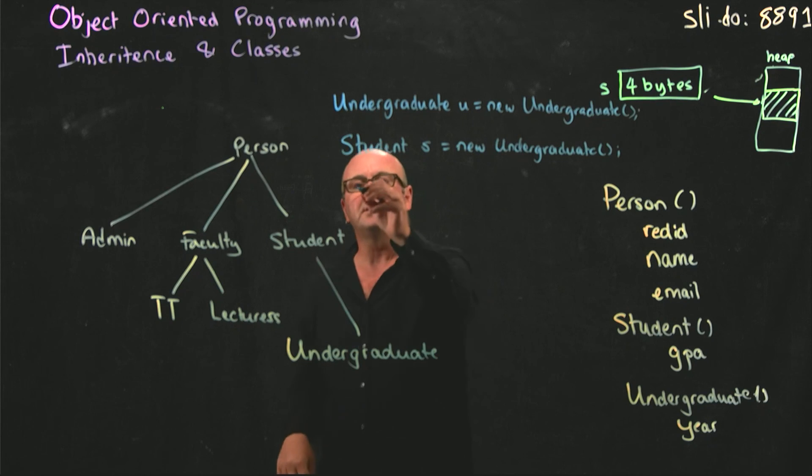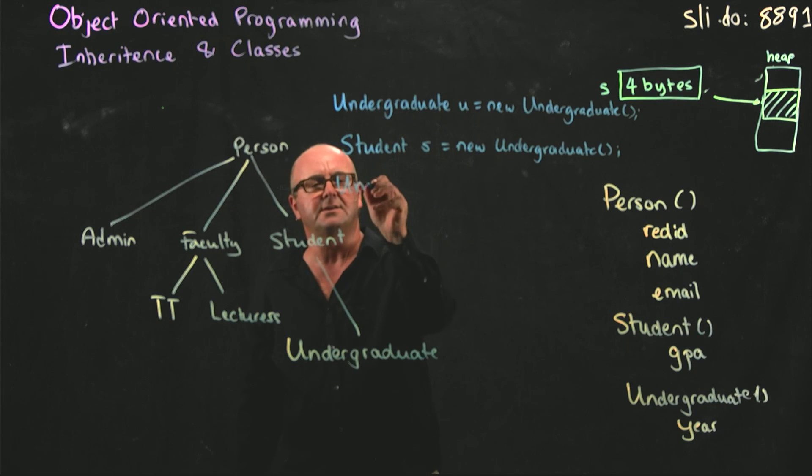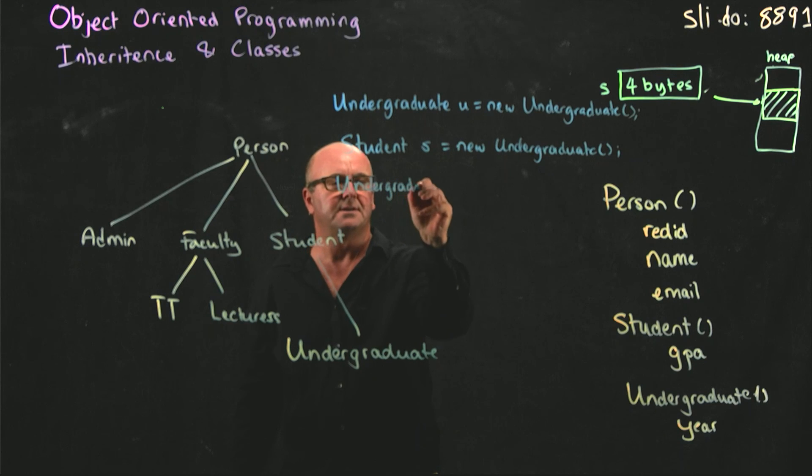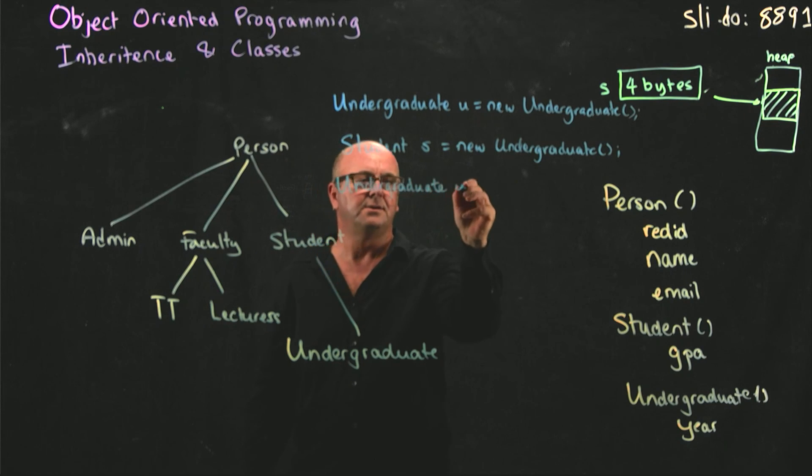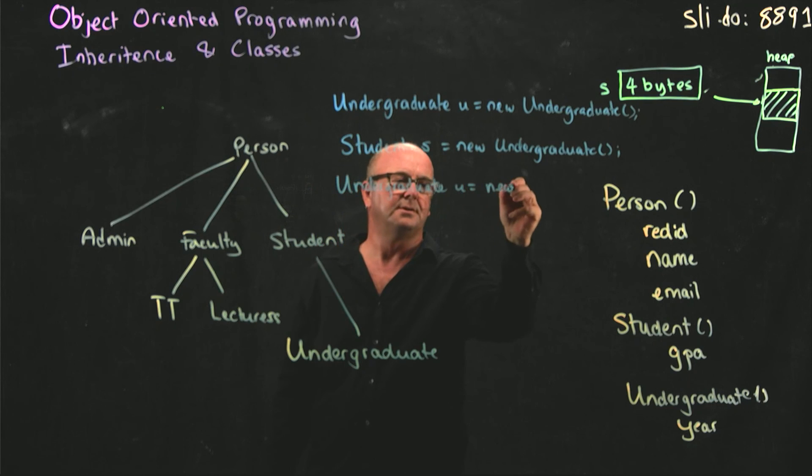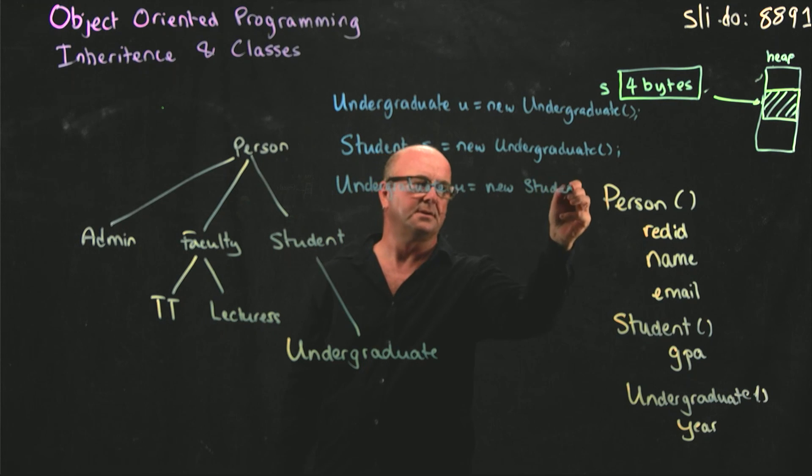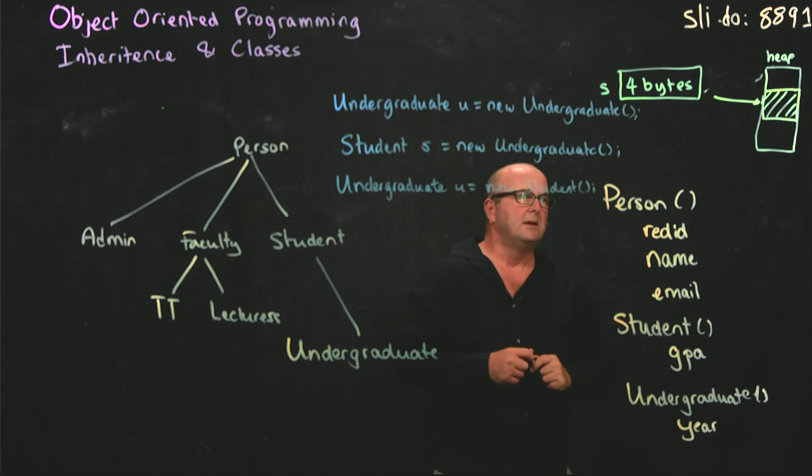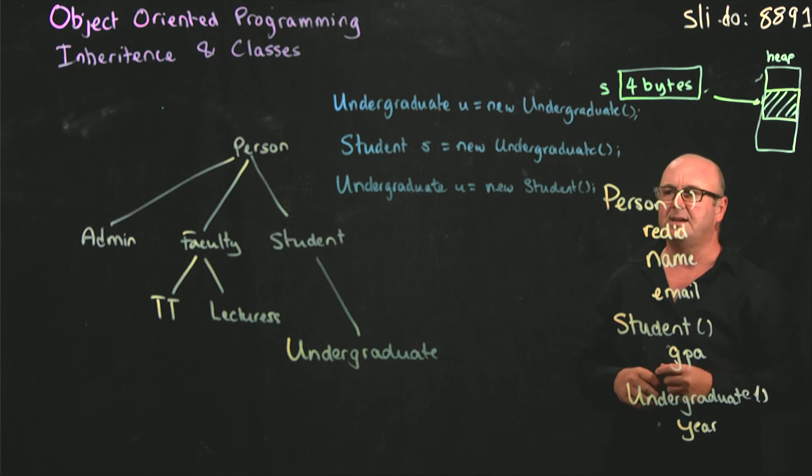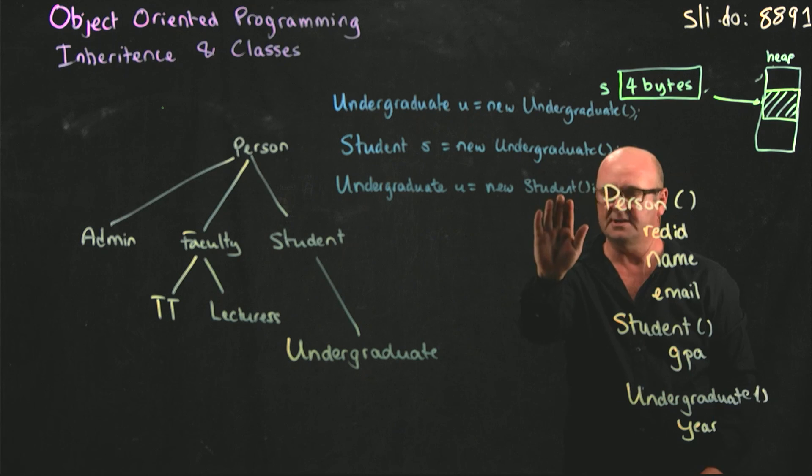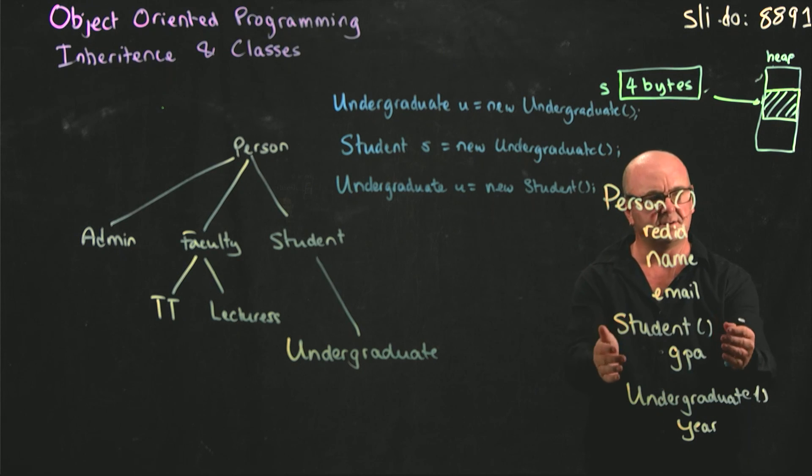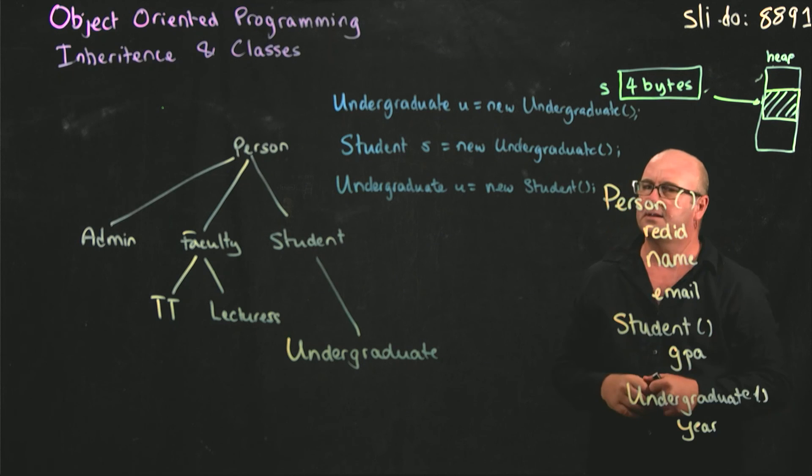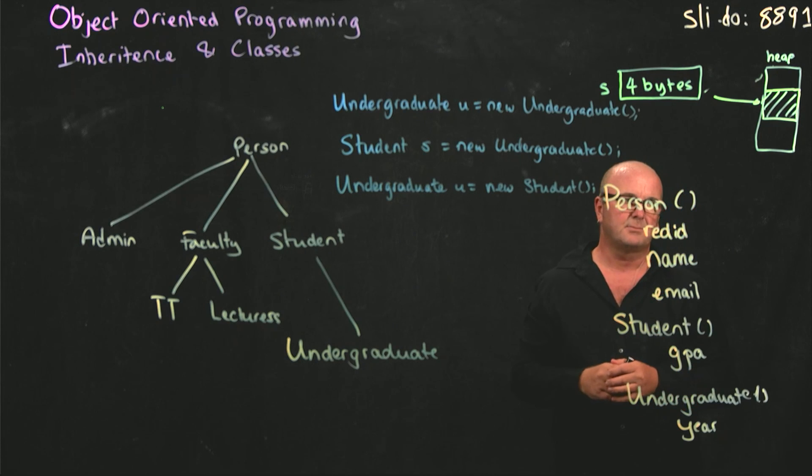But you cannot do it the other way. So you cannot say undergraduate u is new student. Because if you do that, we only get space allocated on the heap for whatever a student is. And the student only has access to its methods and the methods in its predecessors.